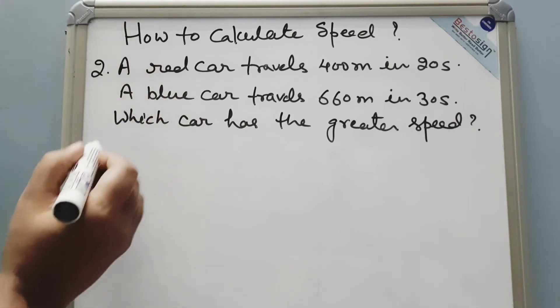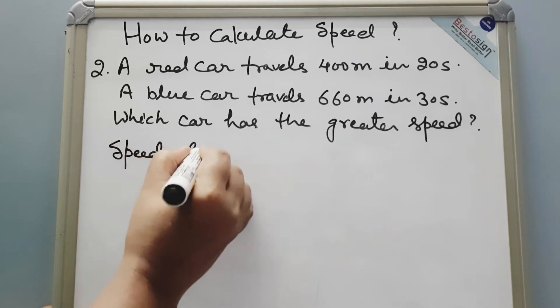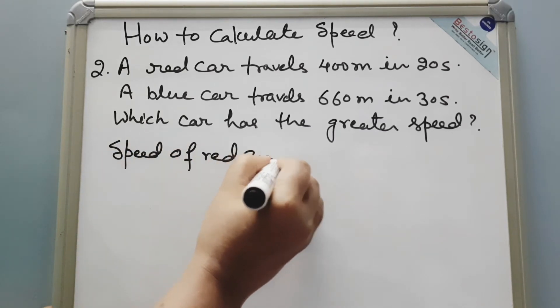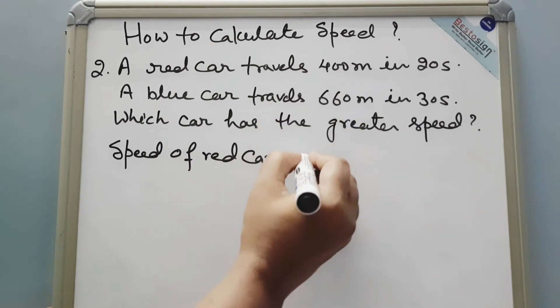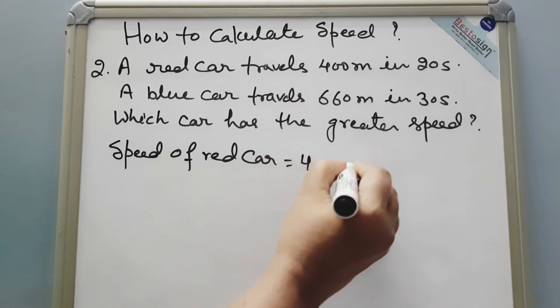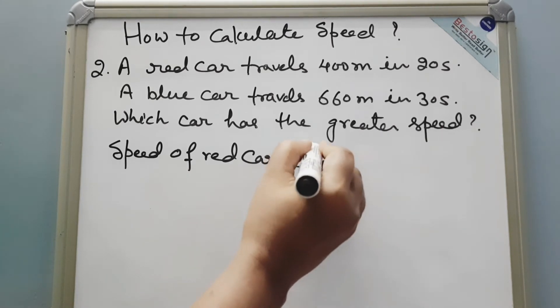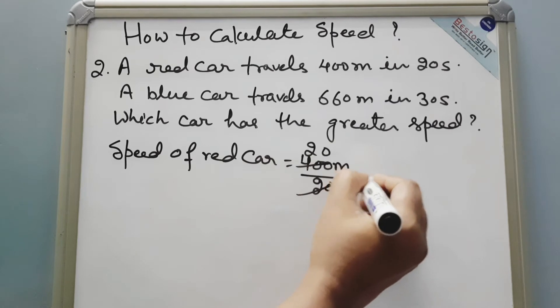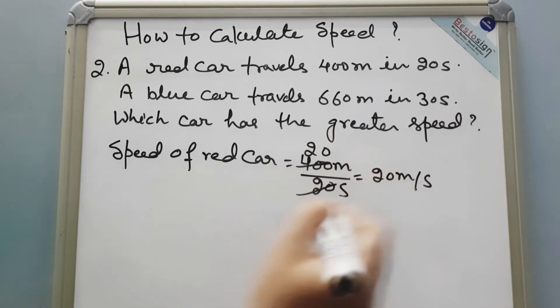So first we will calculate the speed of the red car. Speed of red car is equal to, again the formula is distance divided by time, so distance is 400 meters and time is 20 seconds. Speed of red car is 20 meters per second.